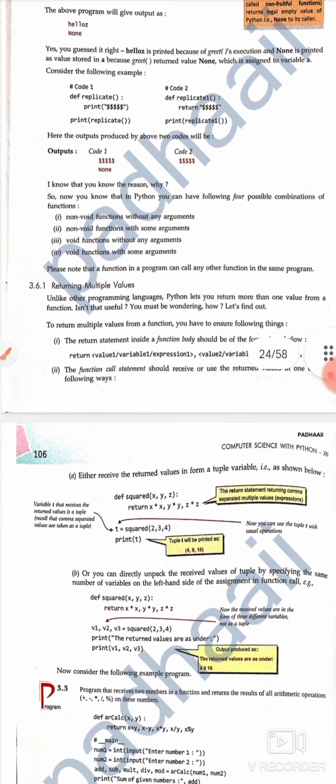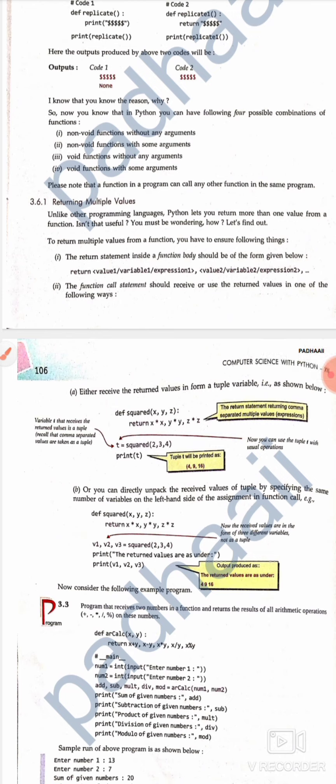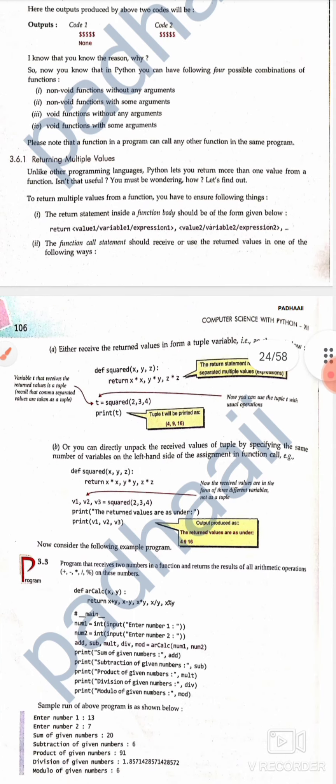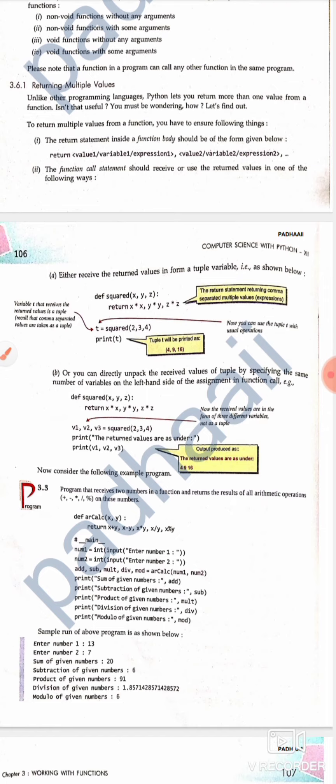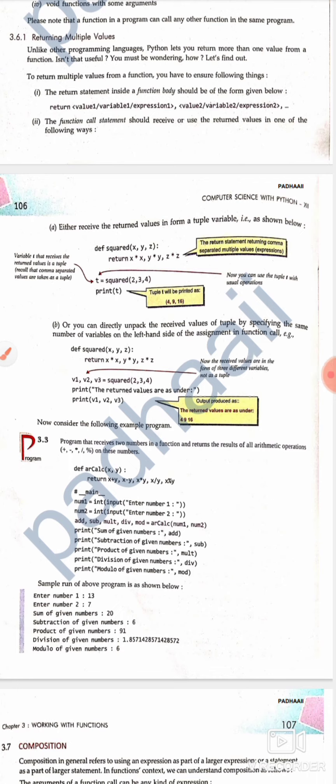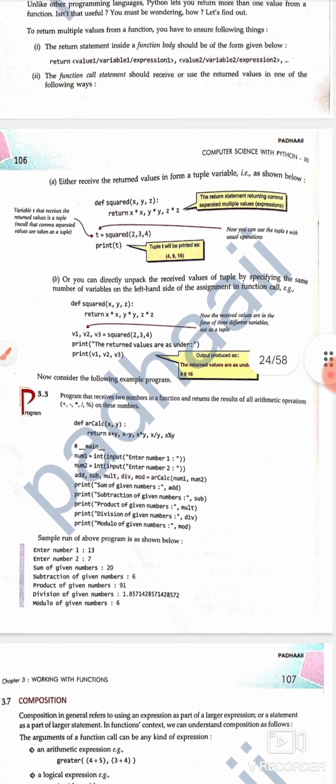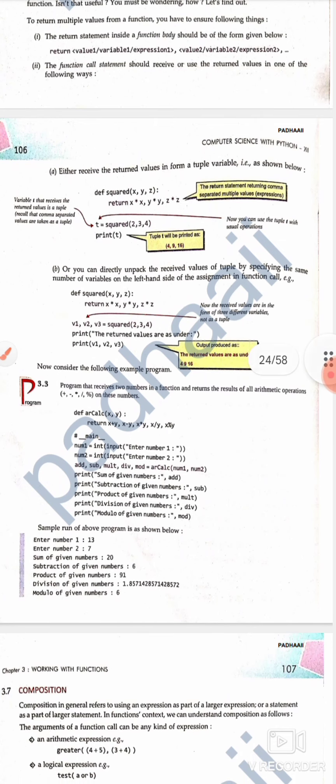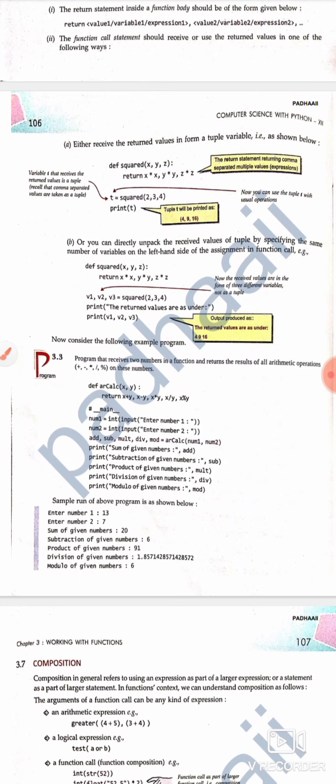Returning multiple values is also possible. The return statement should be of the form: return value1, value2, expression, etc. You can receive the return values as a tuple with comma-separated variables, or directly unpack the received values by specifying the same number of variables on the left hand side of the assignment in the function call. I'll show how return values work, then demonstrate this function.